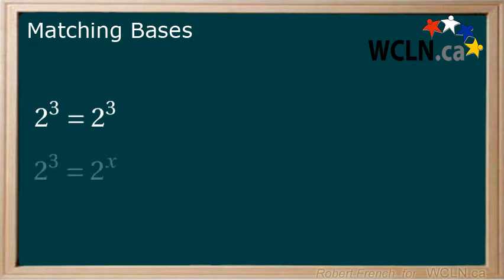Now consider this. 2 to the power of 3 equals 2 to the power of x. We know from our previous example that x equals 3 in order for both powers to be equal.